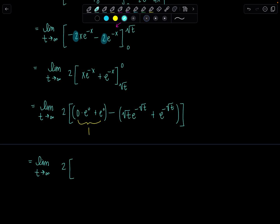So this is going to be 2 times 1 minus, now watch how I'm going to rewrite this guy. It's going to be square root of t over e to the square root of t, and then minus the last one's just 1 over e to the square root of t. Good?